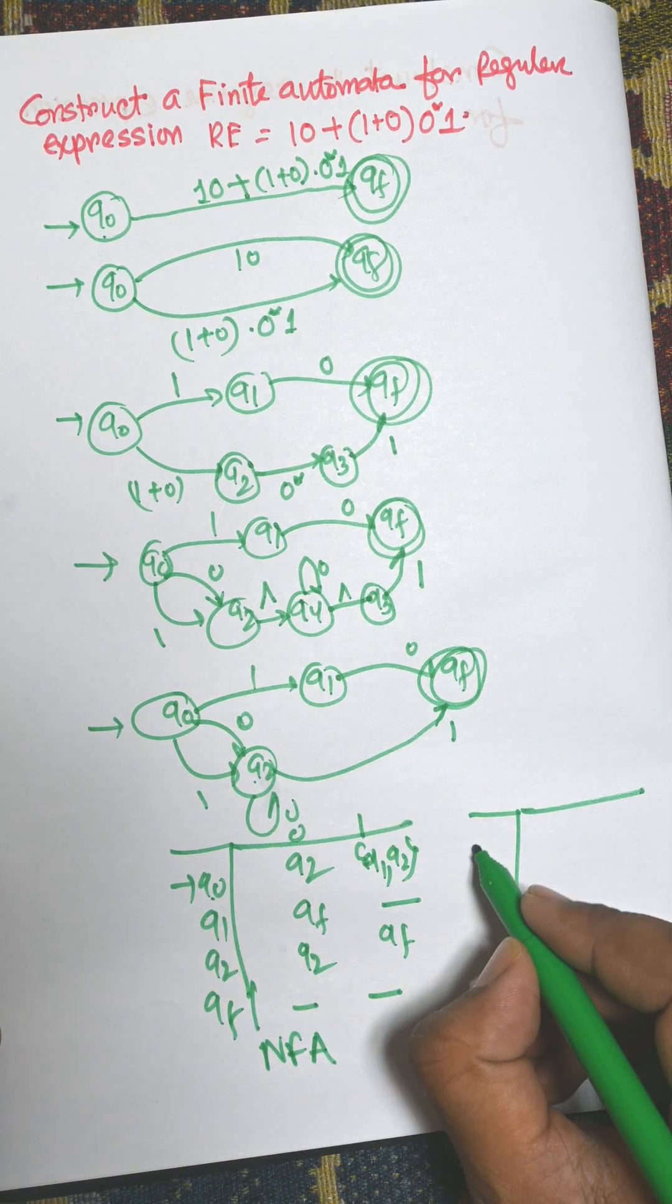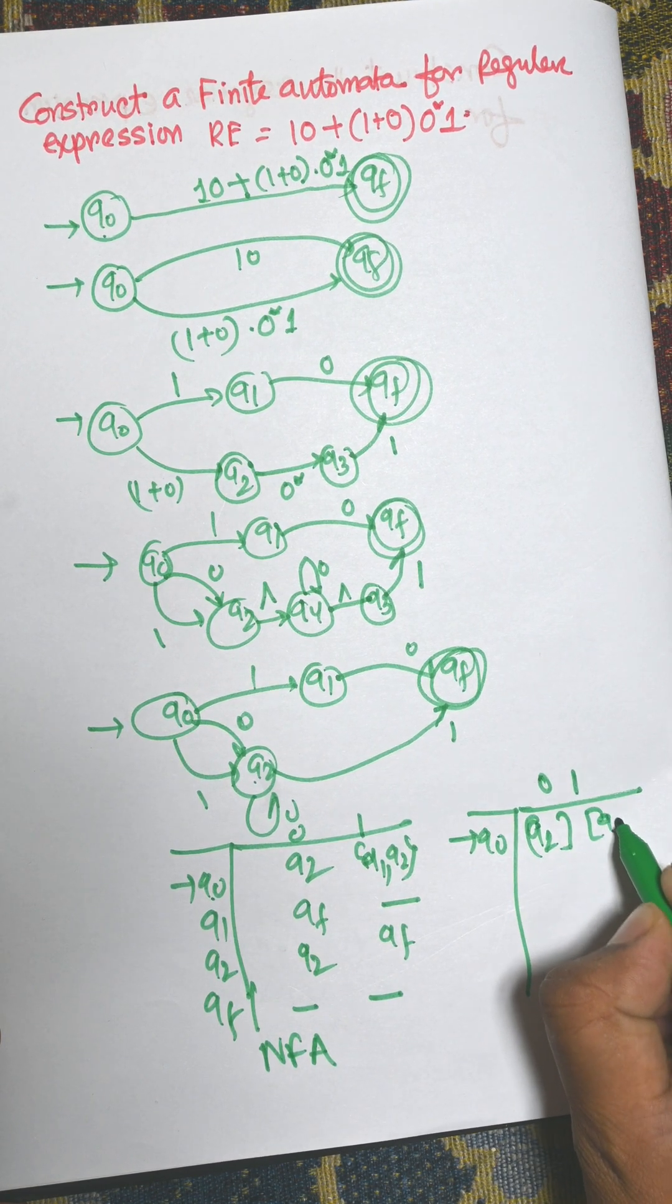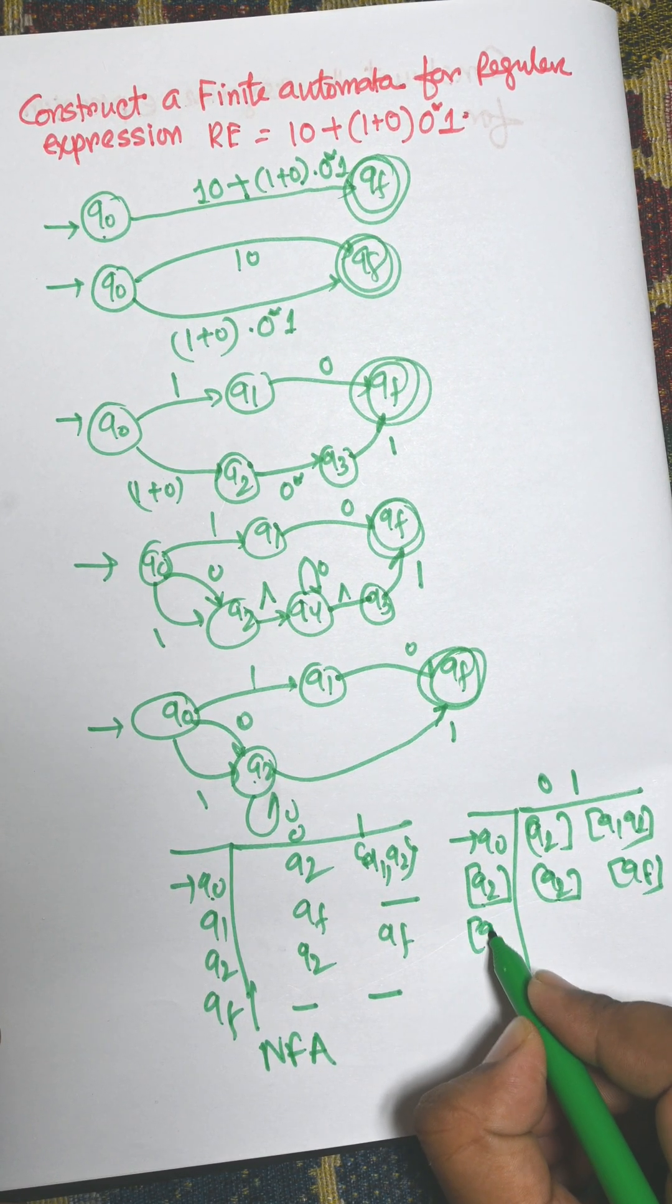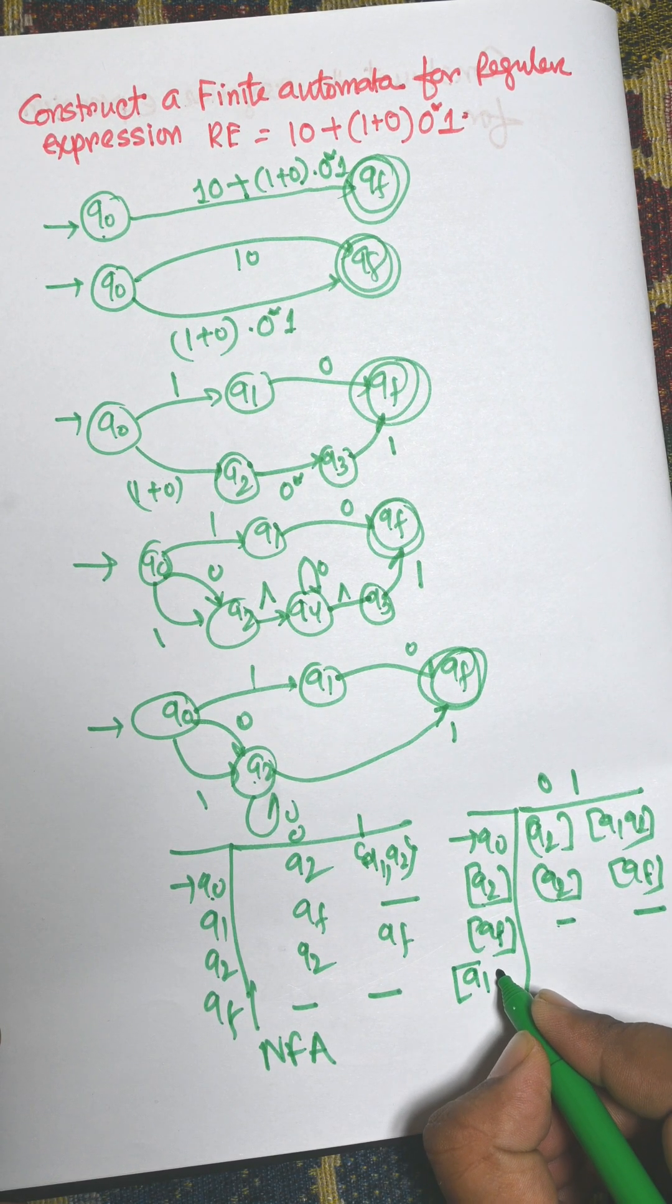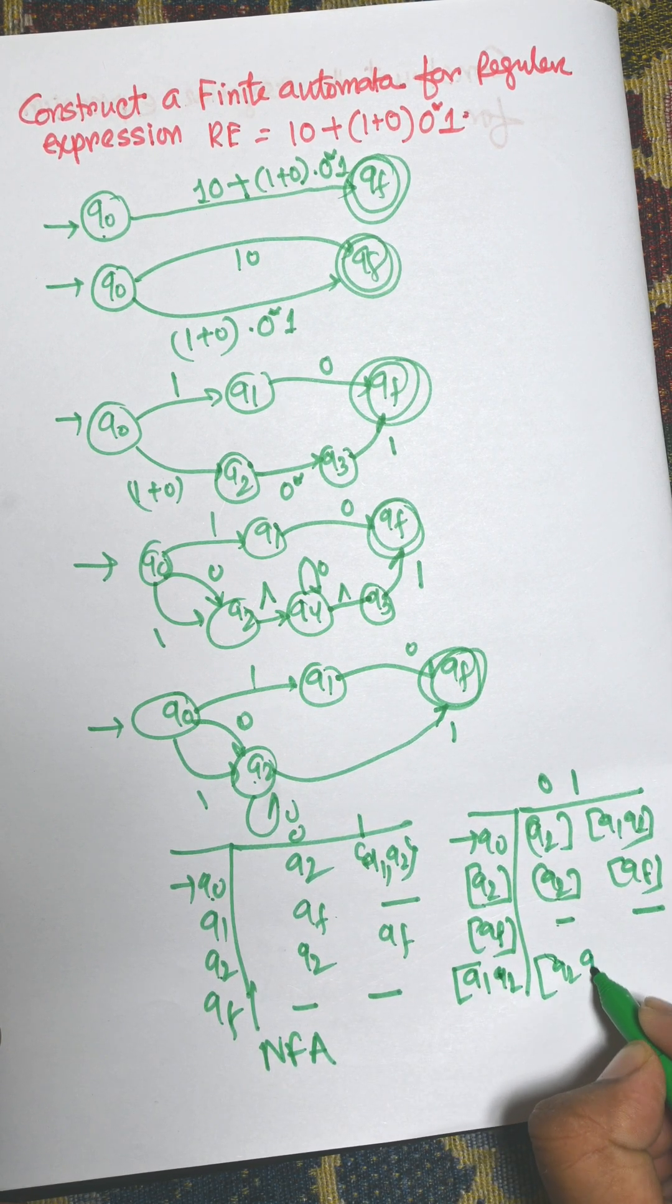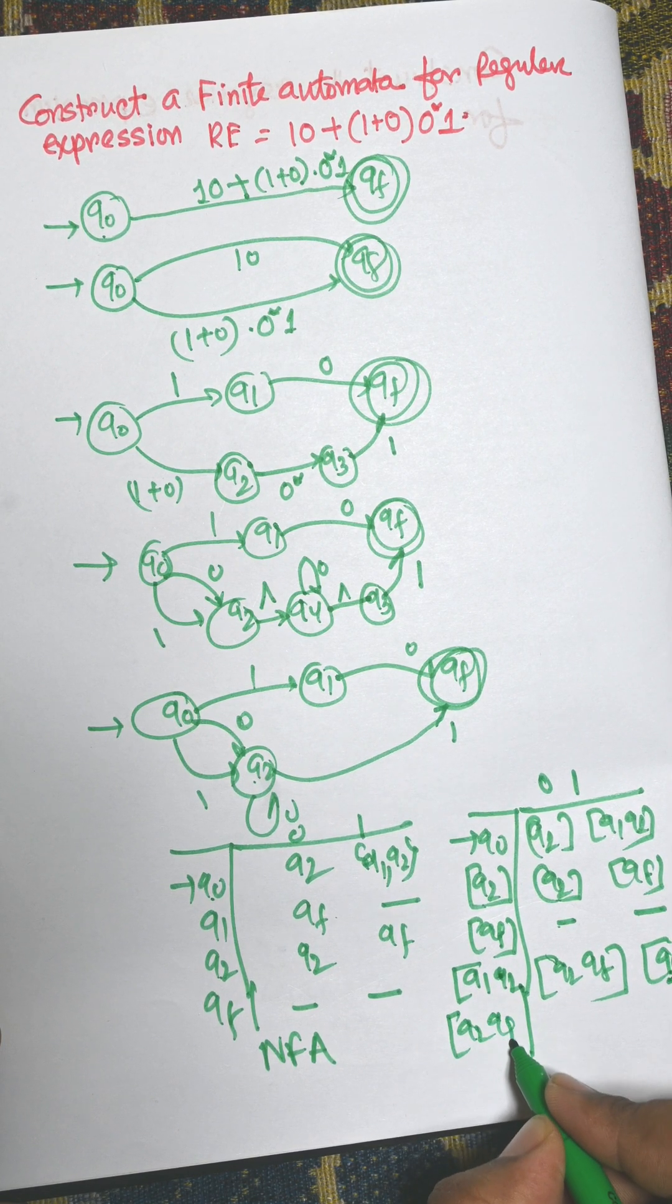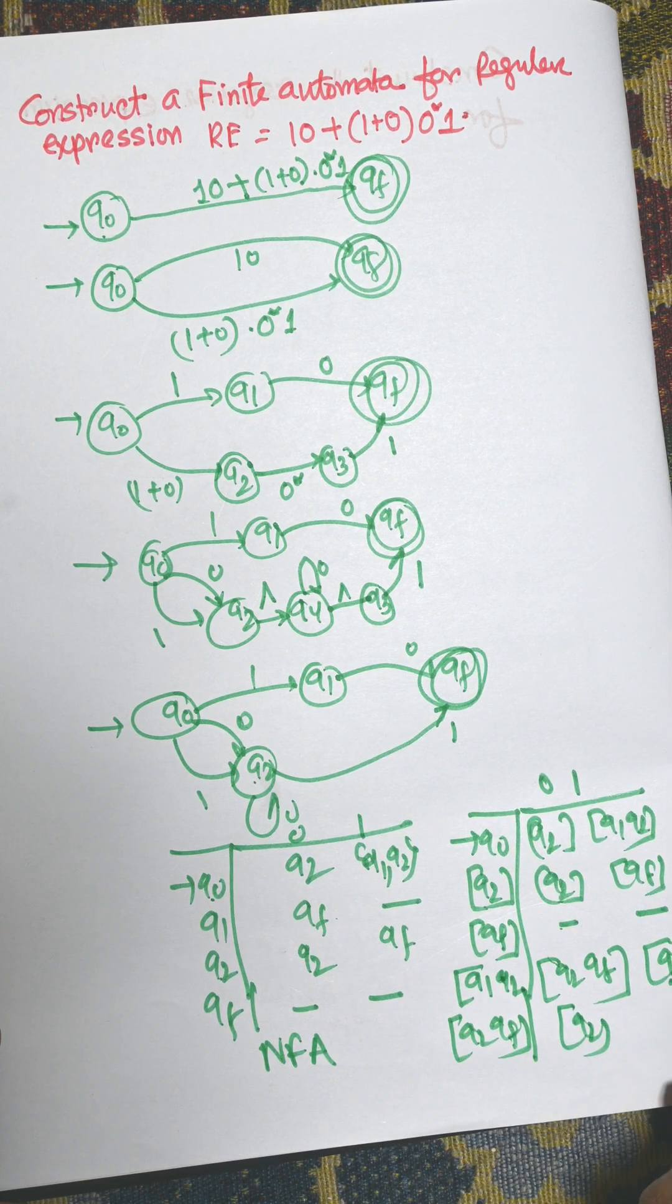Now the DFA. We need to consider the initial state q0, q1, q2, and q1 q2. Now next we need to put the q2 as input. For q2 this is q2 qf, and for qf there is dash dash, no output state. Now we can consider q1 and q2. For q1 qf and for q2 q2 qf. And for q2 qf there is for 0 q2 q2 and for 1 qf.